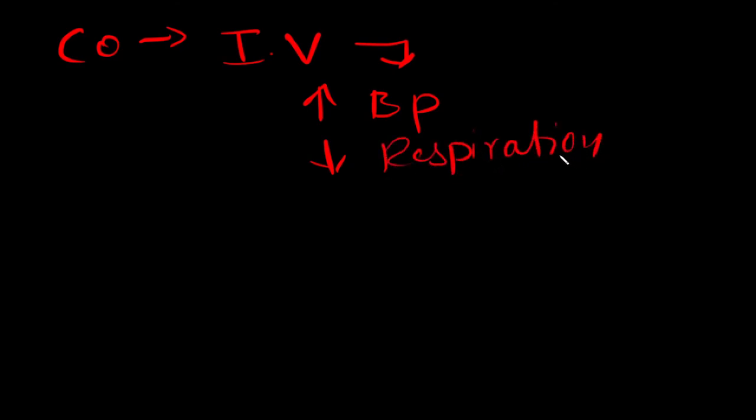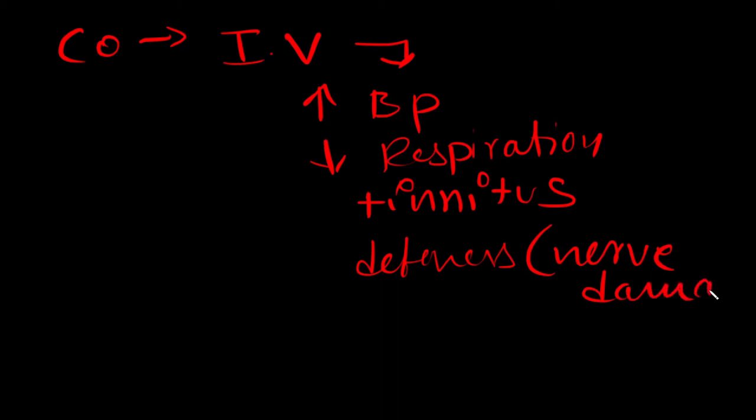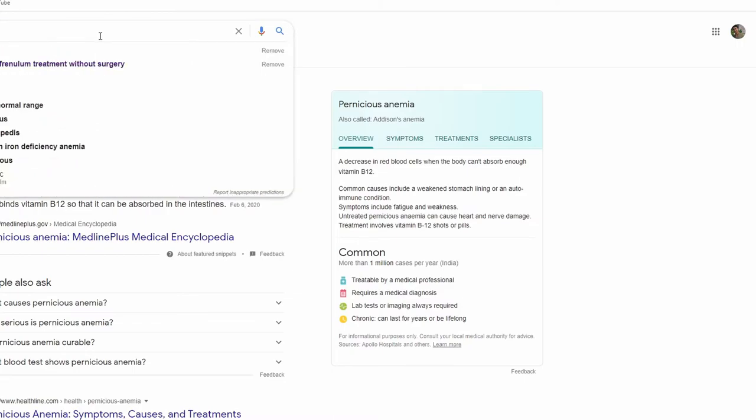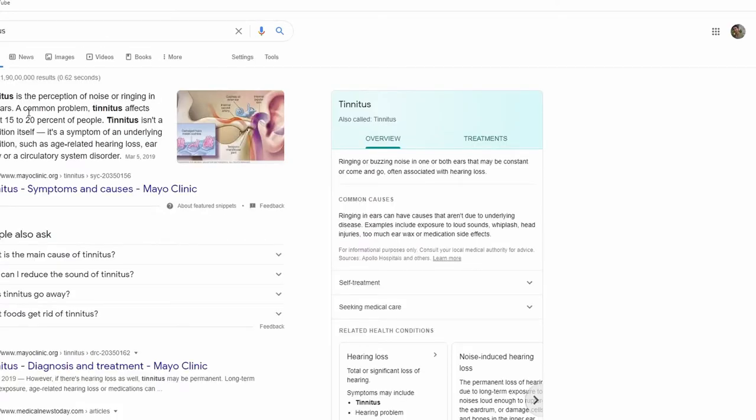When cobalt was given as intravenous injection, increased blood pressure, decreased respiration or slowing of respiration, tinnitus, and deafness was observed due to nerve damage caused by cobalt. In case you are not familiar with tinnitus, it means ringing or buzzing noise in one or both ears that may be constant or come and go, often associated with hearing loss.